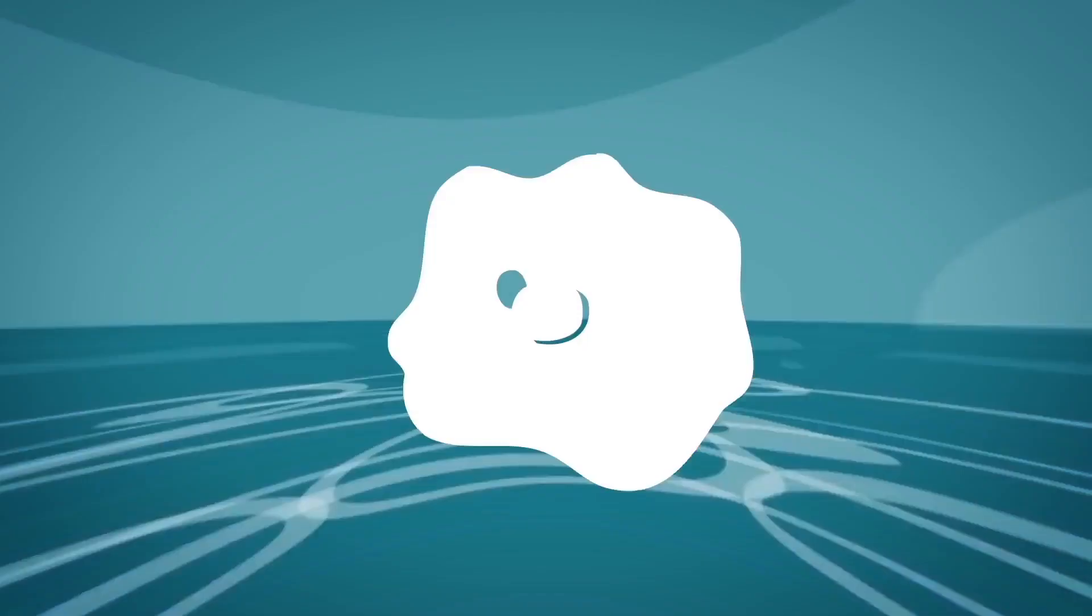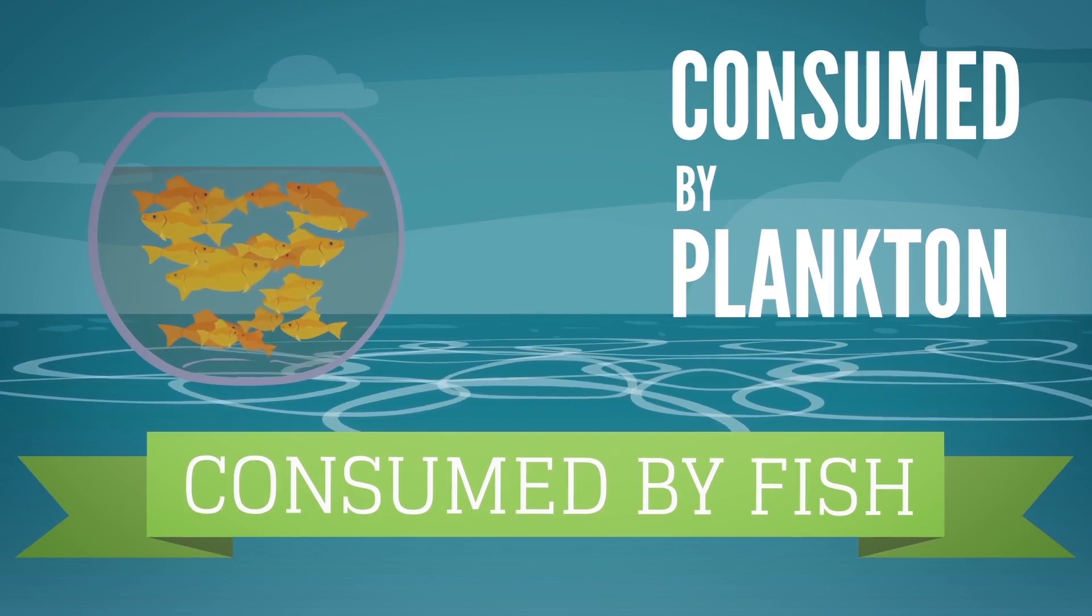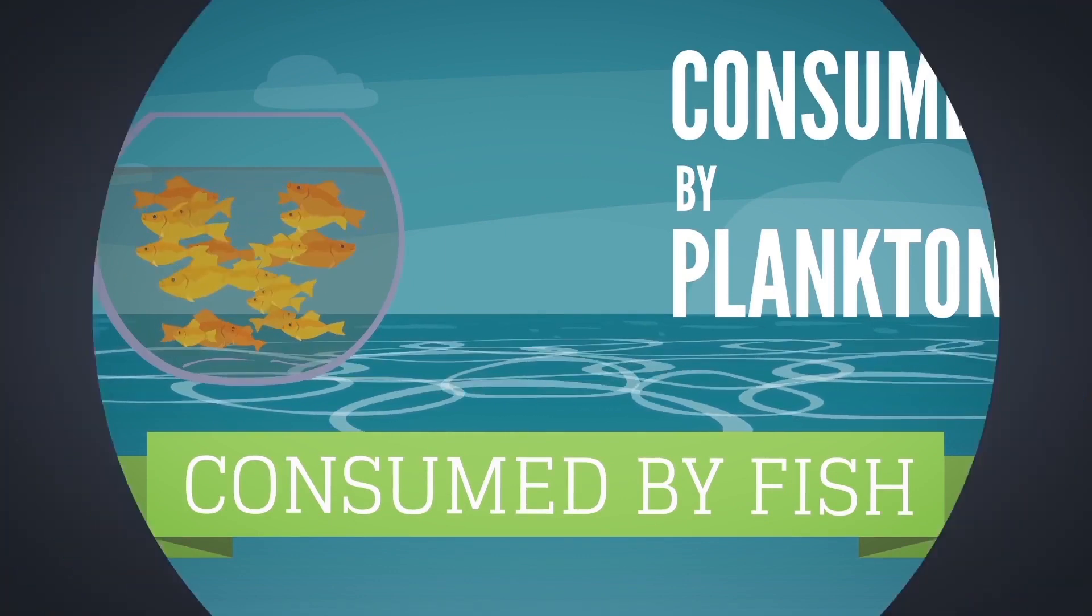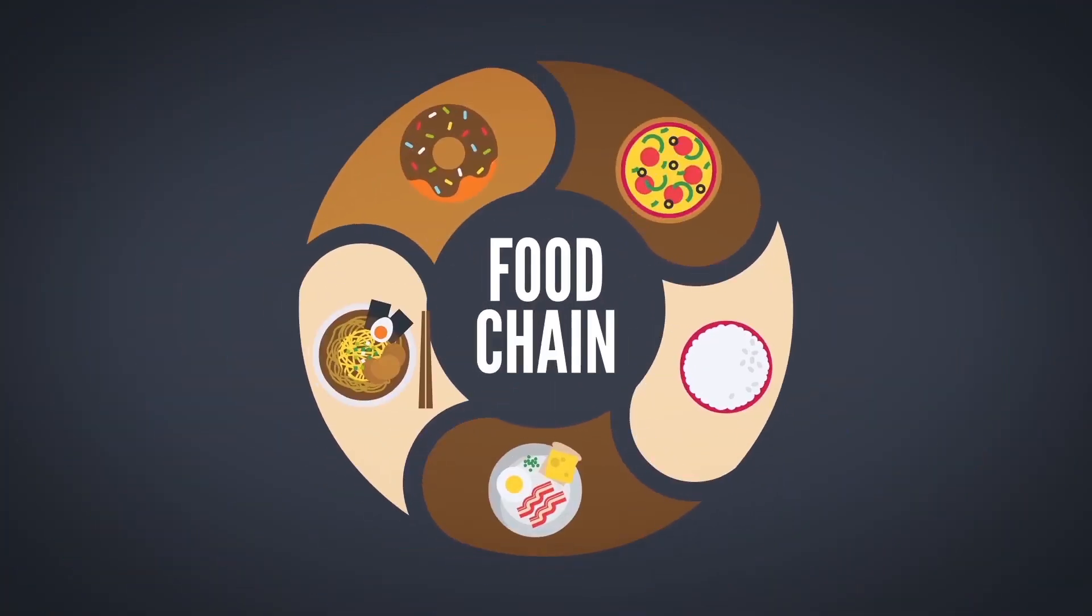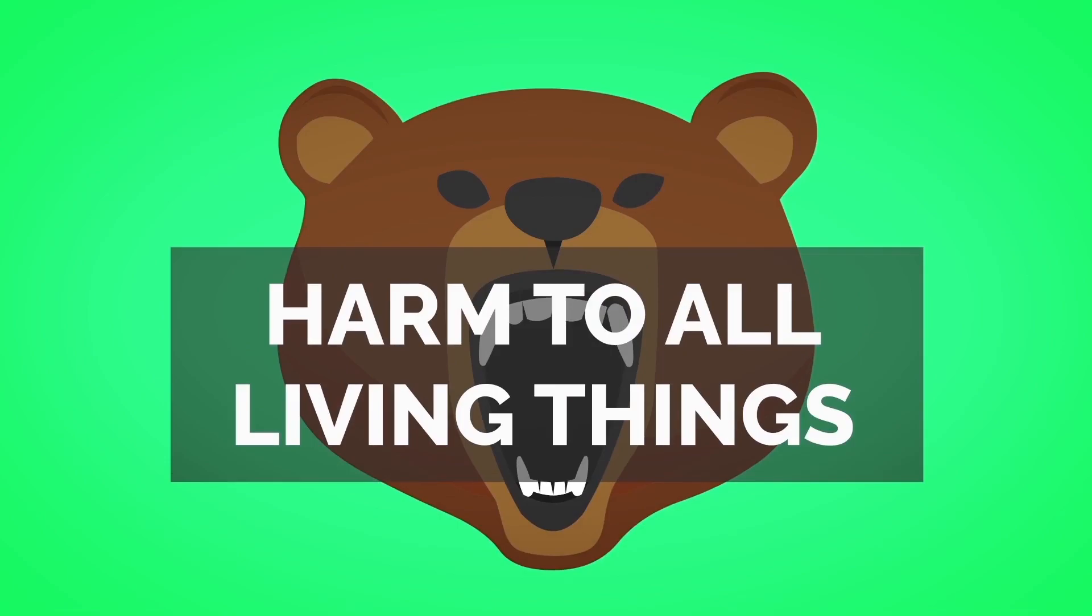Plastic poisons the soil, and in the ocean, plastic products are consumed by plankton, which is then consumed by fish, etc. When traveling up the food chain, plastic poisons every living thing on the planet. Plastic products cause irreparable harm to all living things on the planet.